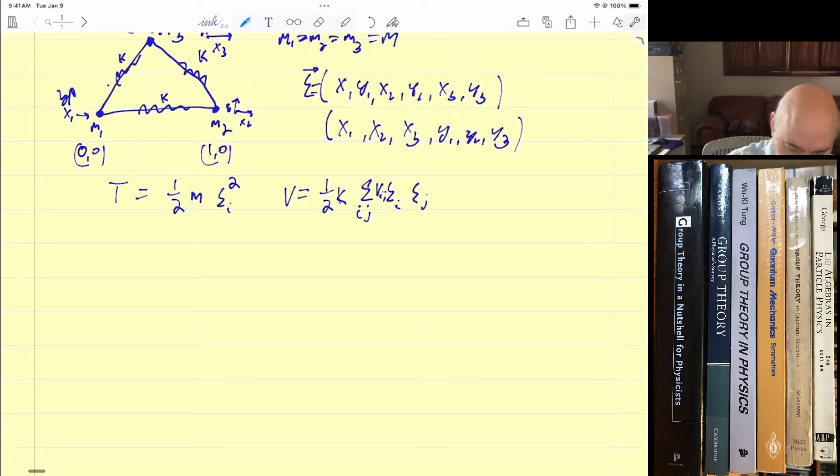And now, you can either think of it as a Lagrangian equal to T minus V, and use the Euler-Lagrange equations of motion, or you just think of it as Newton's second law. Either way. And we have basically you get M chi_i double dot is equal to minus the partial of V with respect to chi_i. This is equal to minus k, sum over j, v_ij, chi_j. V is symmetric. V_ij equal V_ji. That gets rid of the 1 half factor.